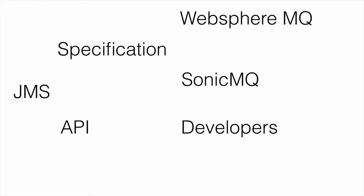We will learn one single API and we will be able to use any of these message-oriented middlewares. In the initial days, we had to learn the Java API for WebSphere MQ and the Java API for SonicMQ separately. But once JMS came into picture, we as developers will learn one single API and these middleware providers will support the JMS API and specification if they are JMS compatible. So it's very easy to migrate our Java application from one vendor to another vendor if they implement JMS and we use JMS in our application.